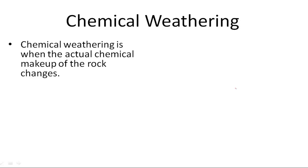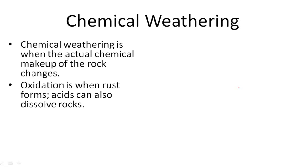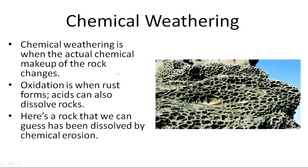Chemical weathering is when the actual chemical makeup of the rock changes. Oxidation is an example, and that's when rust forms. Acids can also dissolve rocks. Here's a rock that has been dissolved by chemical weathering. So it was once a big rock, and we assume that acids in the water carved out all of these little holes.